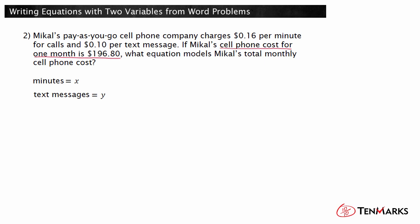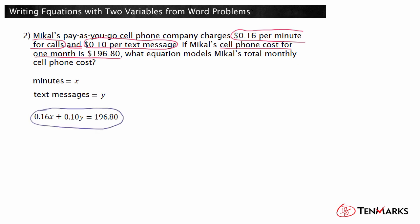The cost of Mikal's cell phone bill is a sum: cost of minutes used plus cost of text messages used. The cost of the minutes for the month is the cost per minute times the number of minutes. The cost of the text messages is the cost per text message times the number of text messages. The sum of these amounts is equal to the total cost for the month. This equation models Mikal's total monthly cell phone cost.